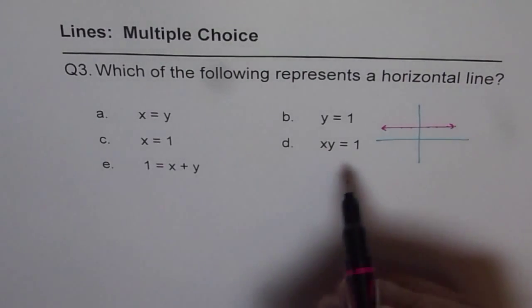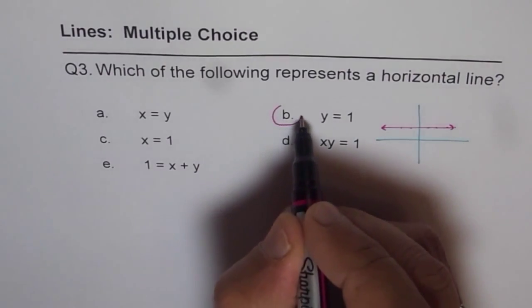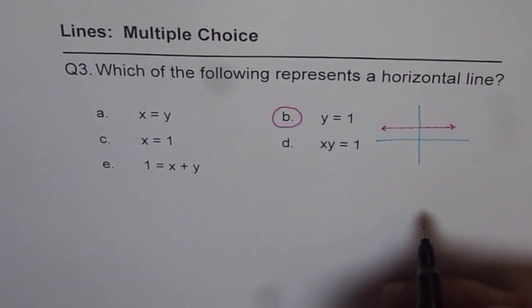So amongst all these equations, y equals 1 is the right choice. Here the y value is fixed. It does not change and it represents a horizontal line.